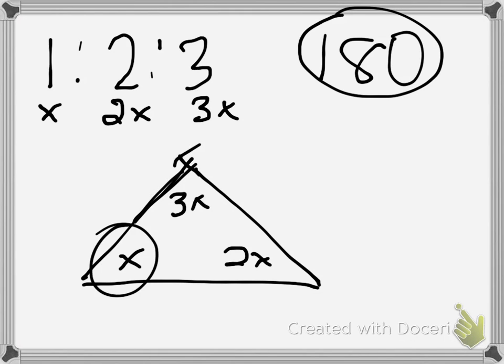So let's first start off by finding x. So if I'm looking for one of the sides, we'll start off with the 1. All of the x's add together to give me 6x, right? So 1 is to the sum of all of these numbers. 1 is to 6, as x is to 180.